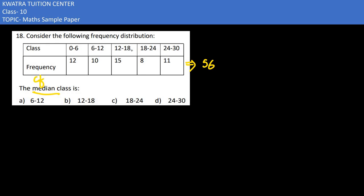let's start with CF, which is the cumulative frequency. First, it's the same - 12. Then we add 10 to get 22. In 22 we add 15, so you get 37. In 37, add 8 to get 45. 45 plus 11 would give you 56.